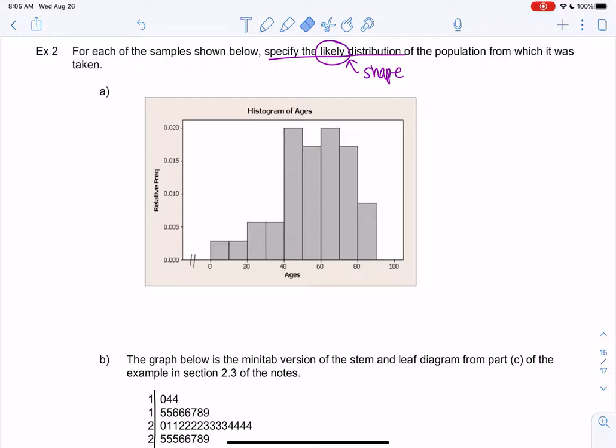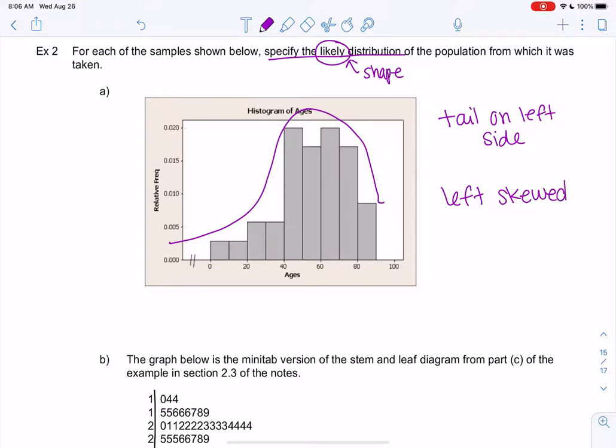So let's look at this first one. We have a histogram of people's ages. I'm just going to draw a little curve and kind of see what kind of shape it might make. To me, I look like I have a little bit of a tail on the left side, which means this would be left skewed. It doesn't make that perfect bell shape, but it looks like it's filling in with a little bit of a tail on the left.